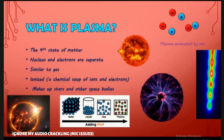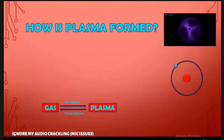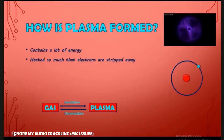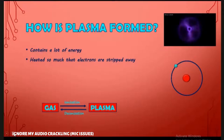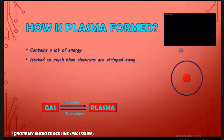How is Plasma formed? Well, Plasma contains a lot of energy. Plasma is heated so much that the electrons are stripped away from the atoms. It is similar to gas, but just with the electrons separated.